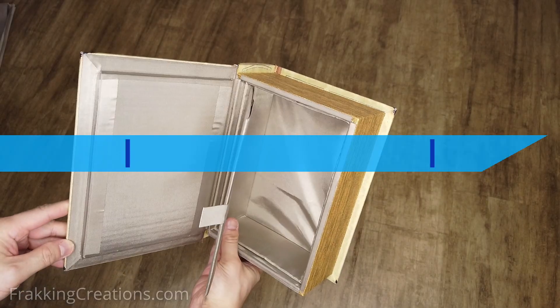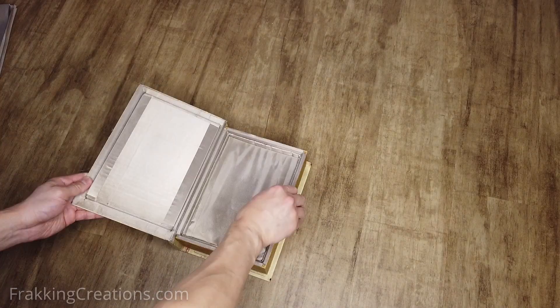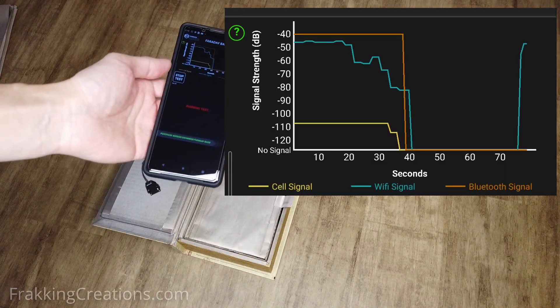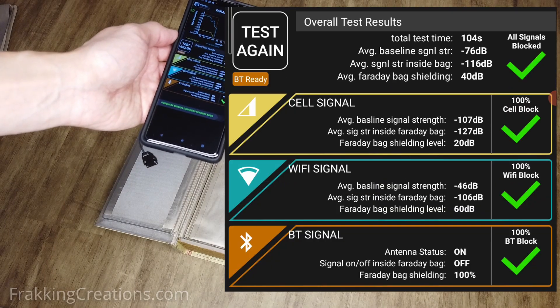Final test of the Faraday book box. After the final modifications are complete, a test reveals that the box is now able to block cell, Bluetooth, and Wi-Fi signals even when we are in the same room as the Wi-Fi router and Bluetooth speaker.